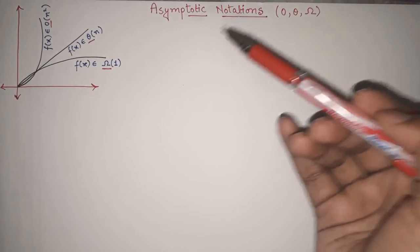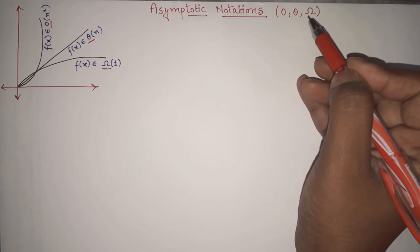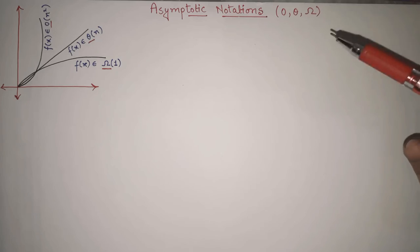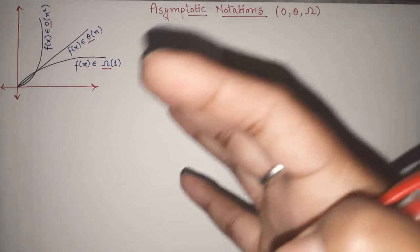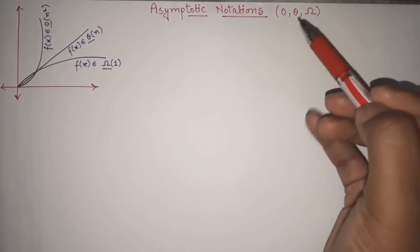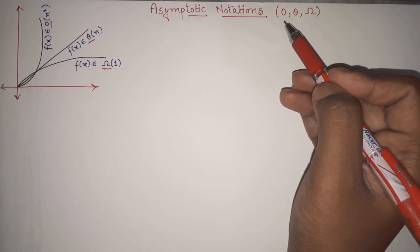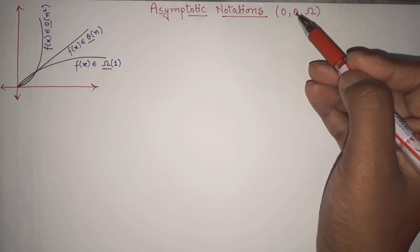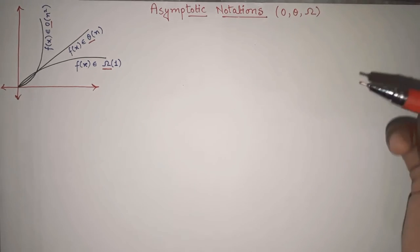The three main notations are: Big O, Big Theta, and Big Omega. These are the three main notations of asymptotic mathematical representation. Many people find this topic very confusing, but it is actually very easy once you understand the concept. Big O is used to represent the upper bound, Omega represents the lower bound, and Theta represents the medium or middle bound.